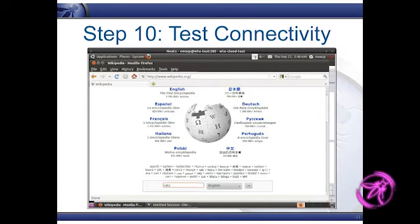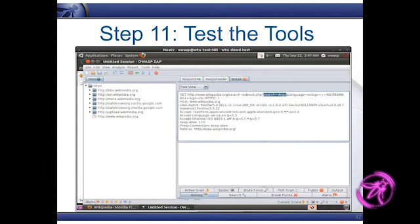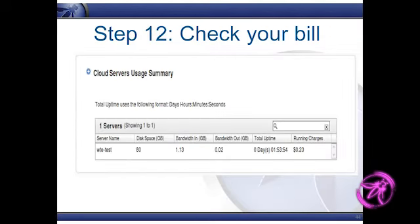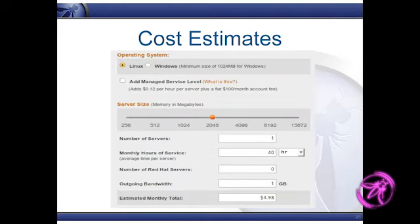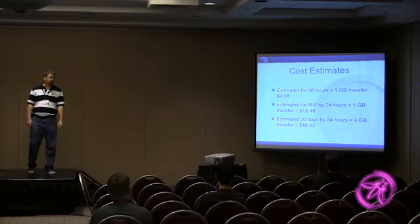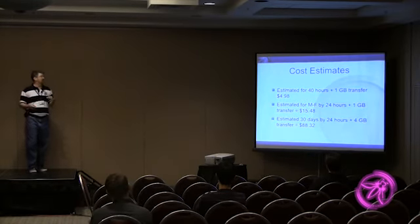Let's test connectivity — I went to Wikipedia and searched for cats. Let's test the tools — I captured cats and changed cats to dogs. I'm intercepting a proxy in the sky, across the hotel's crappy network. And setting this thing up and doing that test cost me 23 cents — it's ridiculously cheap. I did a little math: if you do a Linux system with 2GB RAM and run it for 40 hours, that's five bucks. If you run it Monday through Friday for 24 hours a day and assume a gigabit of bandwidth — which is ridiculously high for web testing — you're looking at $15.48. If you do this for 30 days, 24 hours, with 4GB of bandwidth, it's $88. You can get a testing platform up for essentially nothing, and quickly.